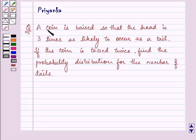Hello and how are you all today? The question says a coin is biased so that the head is three times as likely to occur as a tail.